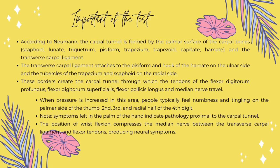People often experience numbness and tingling on the palmar sides of the thumb, the second, third and radial half of the fourth digit when pressure is raised in this area. Note that symptoms felt in the palm of the hand imply carpal tunnel disease. The median nerve is compressed between the transverse carpal ligament and the flexor tendons when the wrist is in flexion, causing neurological discomfort. If overpressure is applied, symptoms can be produced in a healthy individual as well.